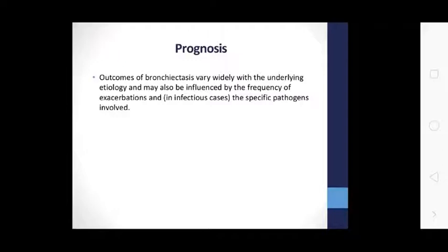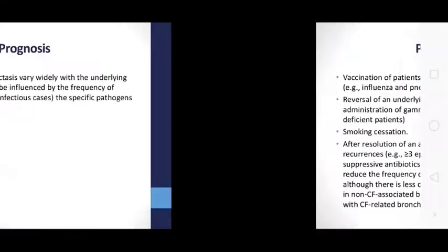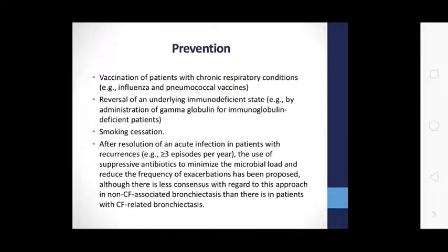Most patients with exacerbations need to be admitted, most commonly due to acute bacterial infection, particularly S. pneumoniae infection, which can be lethal. Treatment of exacerbations includes physiotherapy, sputum culture, broad-spectrum antibiotics assuming Pseudomonas coverage, beta-agonist bronchodilators, and chest physiotherapy. Prognosis and outcome vary widely with the underlying etiology and may be influenced by the frequency of acute infections, the specific pathogens involved. Prevention of bronchiectasis includes vaccination plans for chronic respiratory conditions, such as influenza and pneumococcal vaccines.